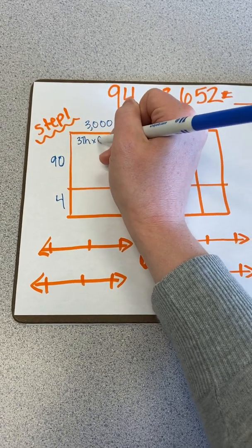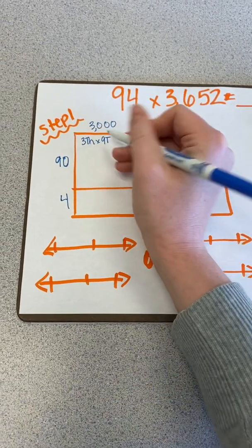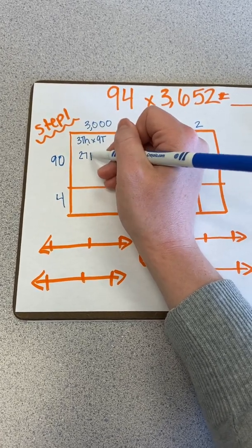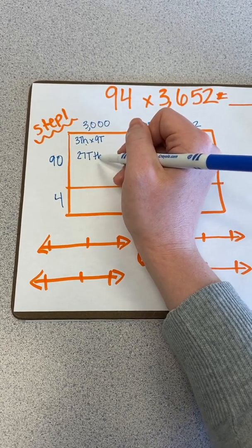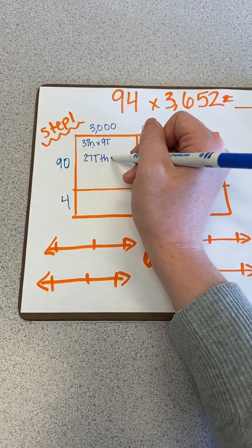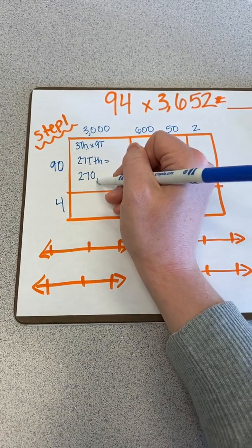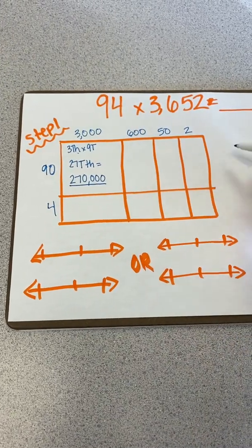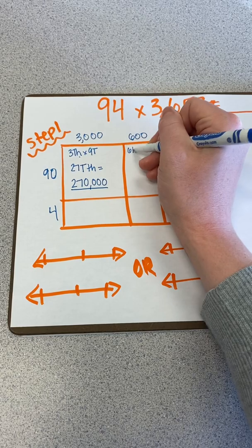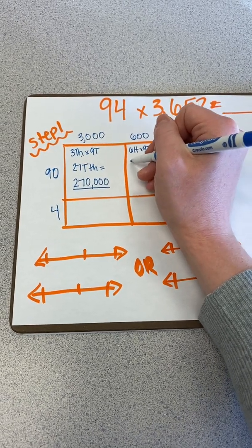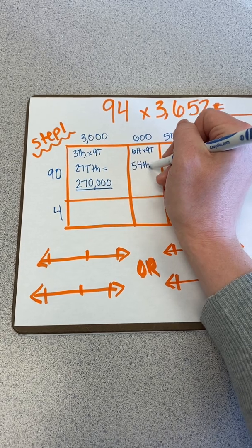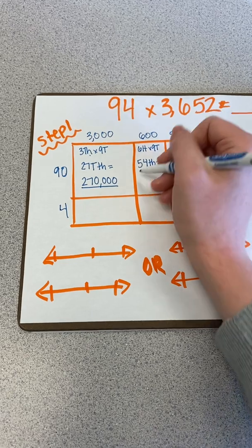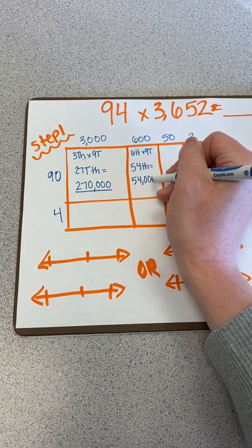3,000 times 9 tens is 3 times 9 is 27. Thousands times tens is ten thousands. So I will have 27 ten thousands, which has a value of 270,000. I'm going to underline that so remember that is one of the numbers I'm going to add over off to the side. Six hundreds times 9 tens is 54 thousands. Since 6 times 9 is 54, hundreds times tens is thousands. 54 thousands has a value of 54,000.